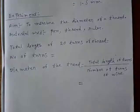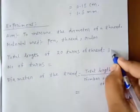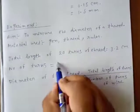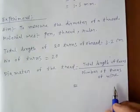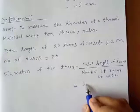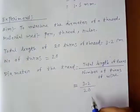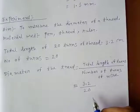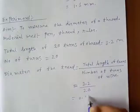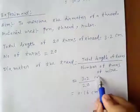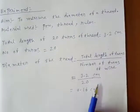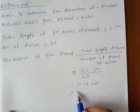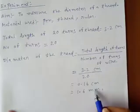20 windings and 3.2 centimeter. So 3.2 centimeter, number of windings is 20. Now, let me divide it, that's 3.2 centimeter divided by 20. So, 0.16 centimeter. The diameter of this thread is 0.16 centimeter that is also equivalent to 1.6 millimeter.